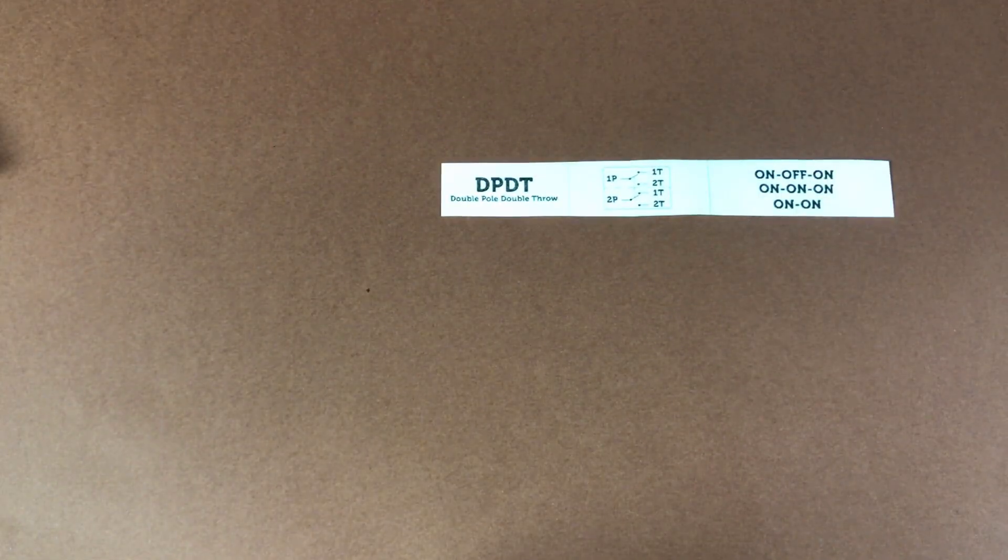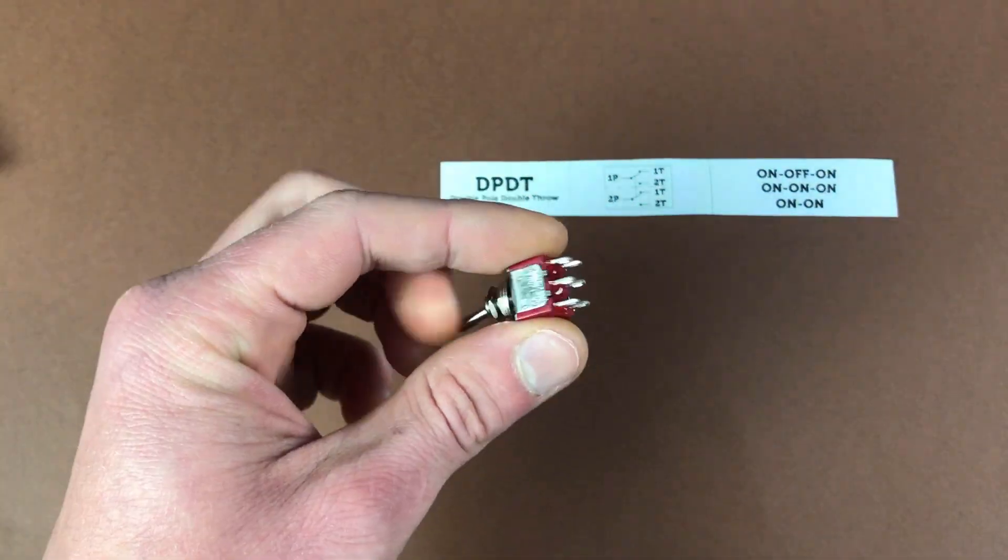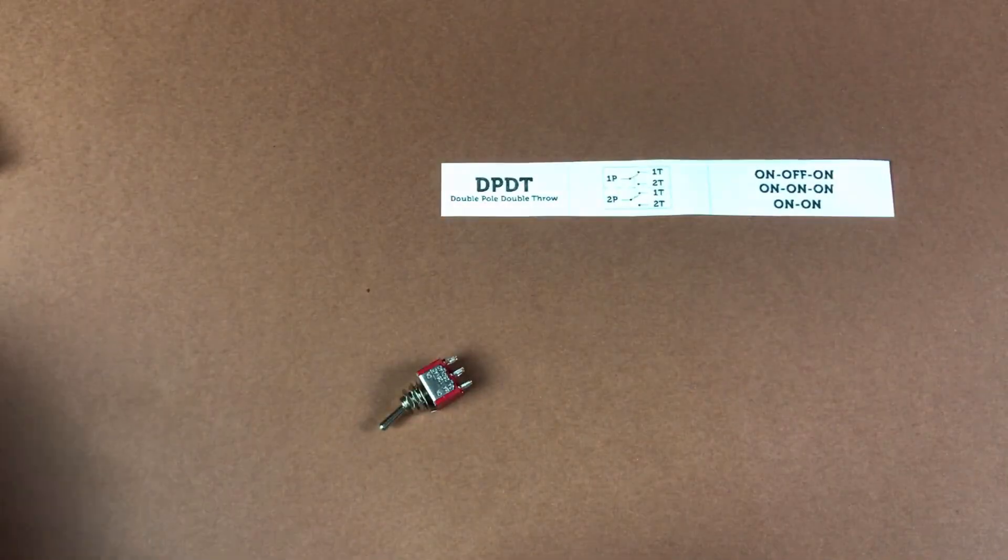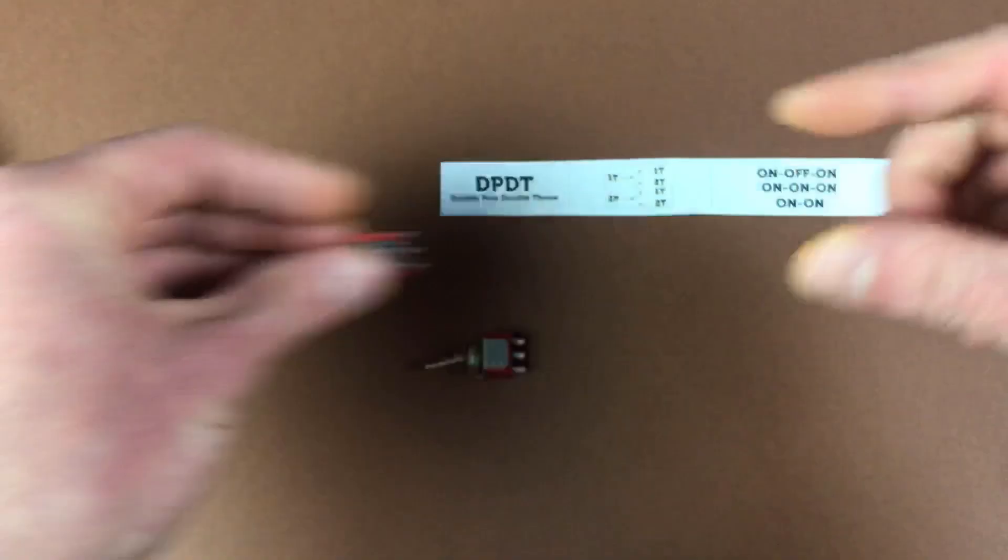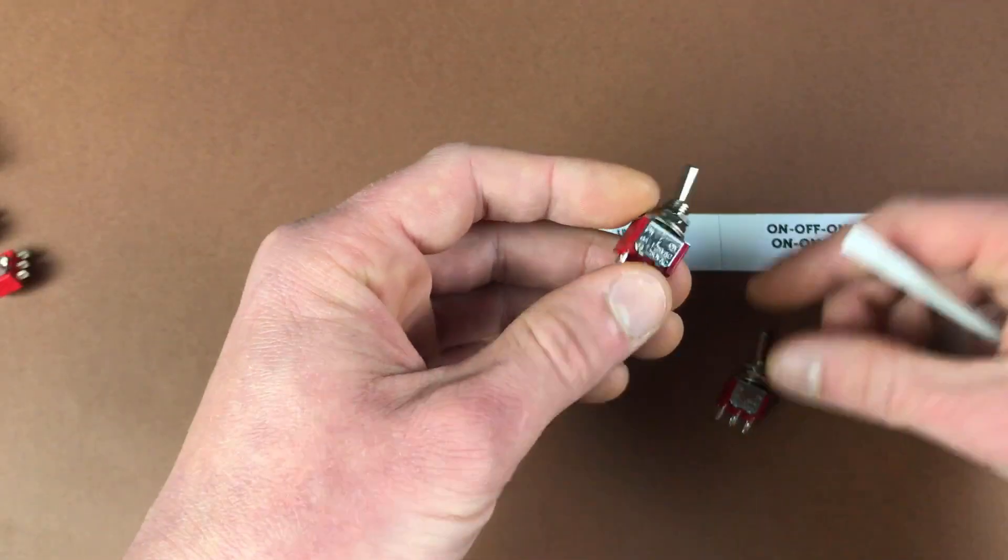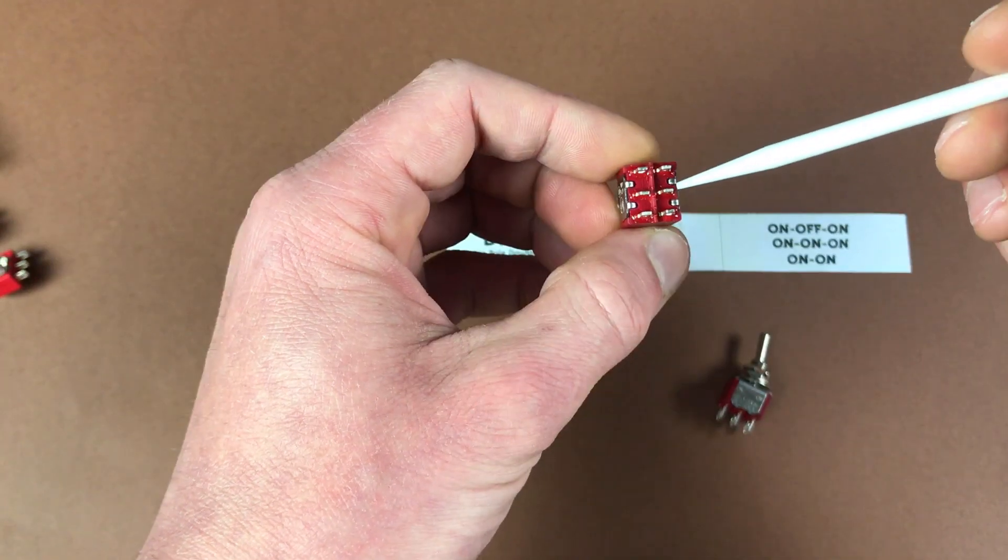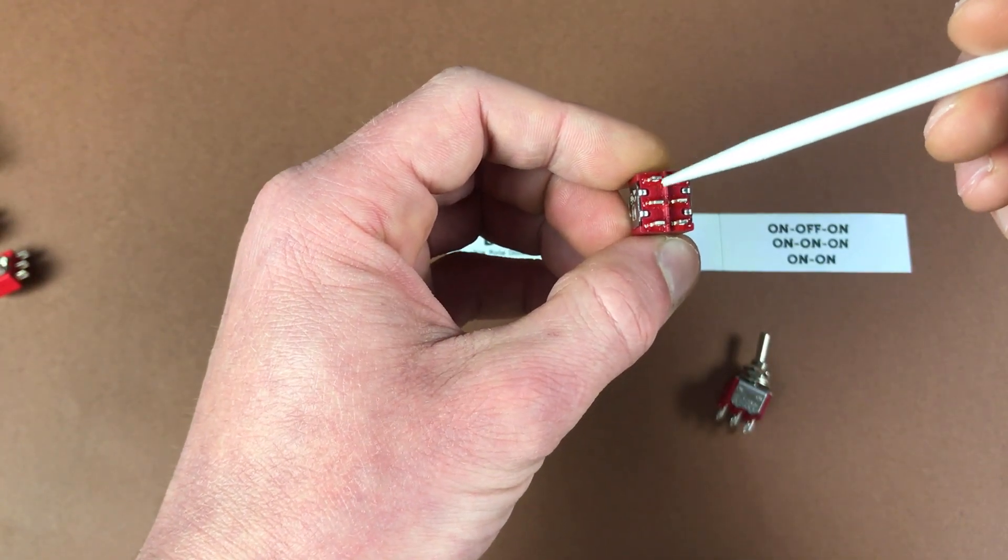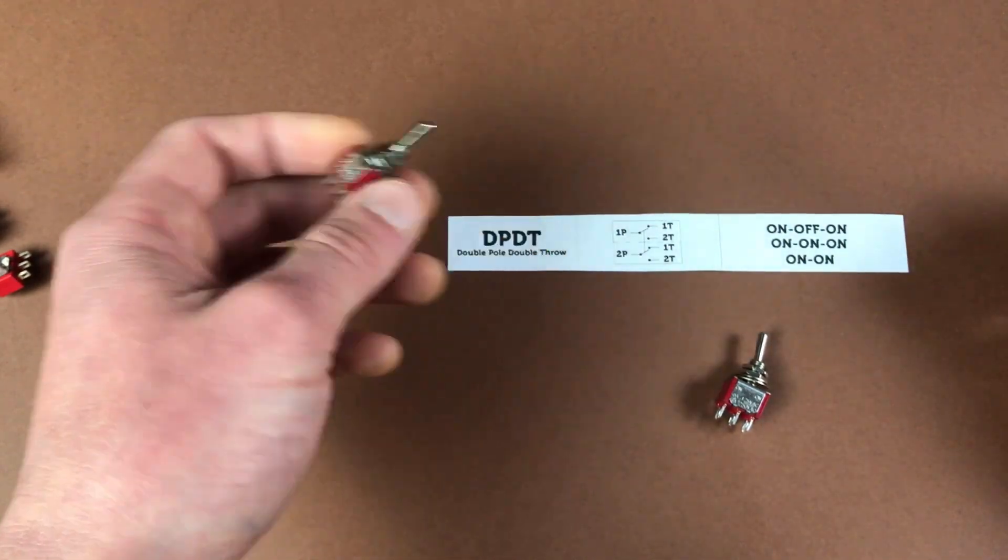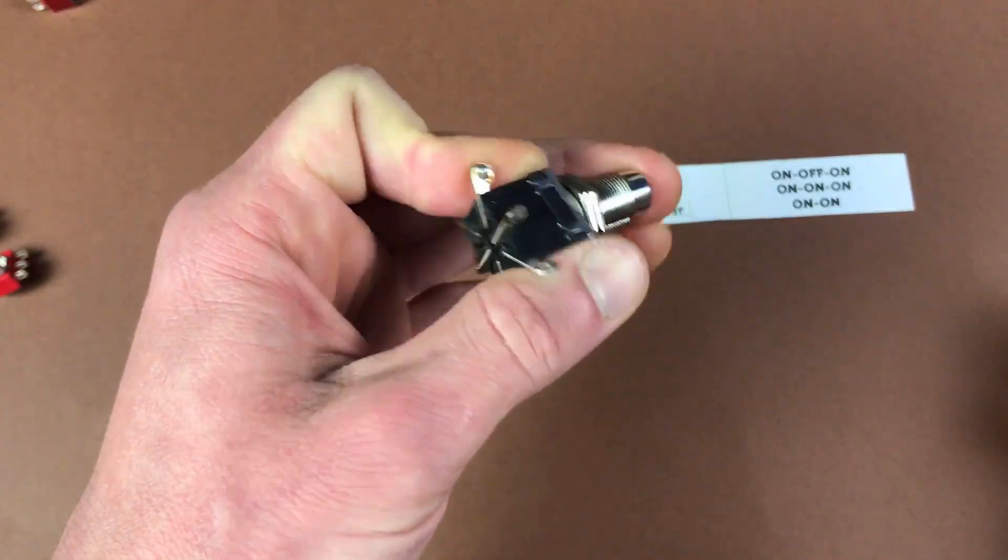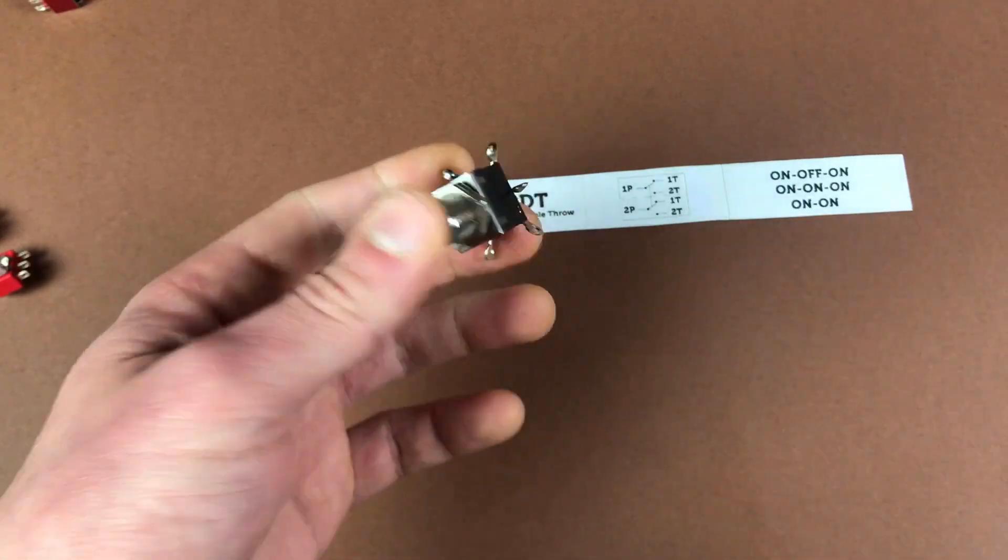Next we have a DPDT, double pole, double throw. I mainly use on-off-on and on-on versions. Simply it's just two SPDT switches tied together controlled by one lever. So now we can control two different circuits in the same time. Connections works the same as in previous switches. Just remember left and right side it's not connected to each other. I like to use those switches for mods as I did in my previous video. Link in a corner.